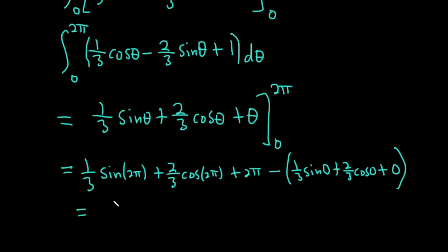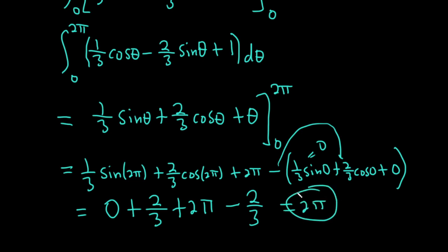On the unit circle, sine is the y coordinate, so sine of 2 pi will be 0. So this is 0. This will be 1. So plus 2 thirds times 1 is 2 thirds, plus 2 pi. And then this is 0 here. And then cosine of 0 is 1. It'll be minus 2 thirds, right? Because this gets distributed here. And oh yeah, so we just get 2 pi as the final answer. Really nice.